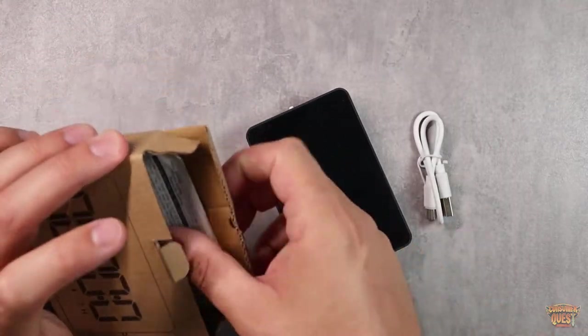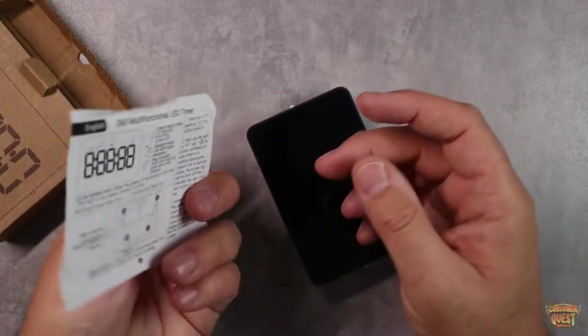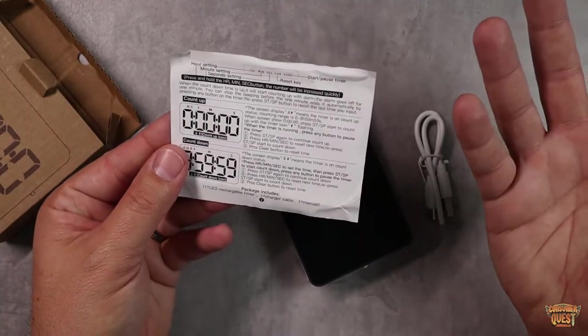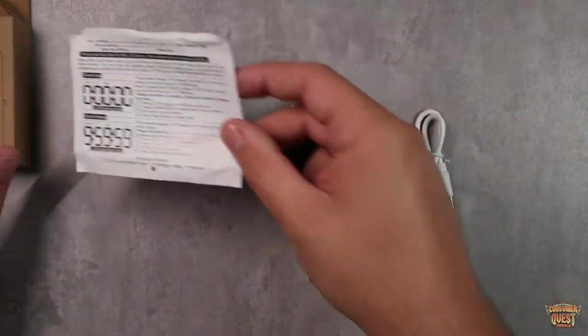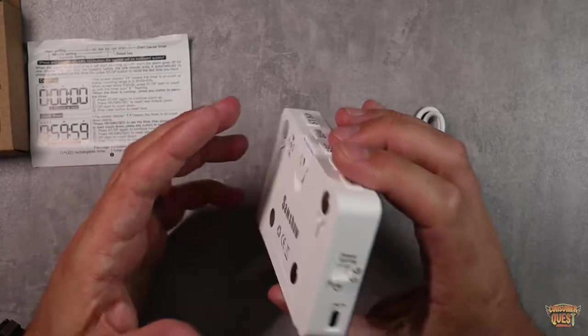In the box you get the charging cable, which is USB-C. You get your instruction manual which shows you how to use it. I'm going to show you how to use it really quick. It's very straightforward, and then you get the timer itself.